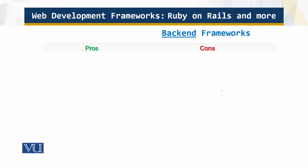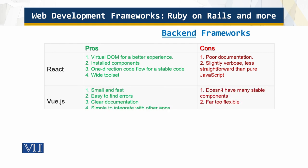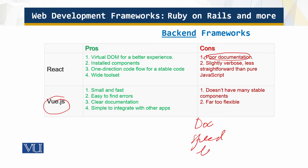Finally, we have Ember and React and Vue.js. A common problem across these frameworks is poor documentation. Looking across all the frameworks covered, there are three issues that appear repeatedly: documentation quality, speed, and the learning curve. These are the key themes to keep in mind when evaluating and choosing a web development framework. That's all for this module — thank you very much.